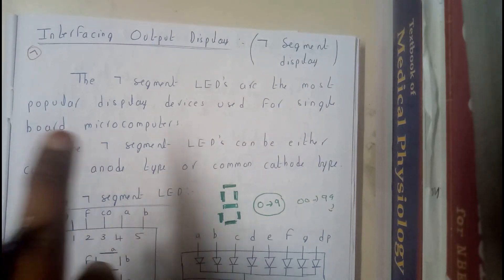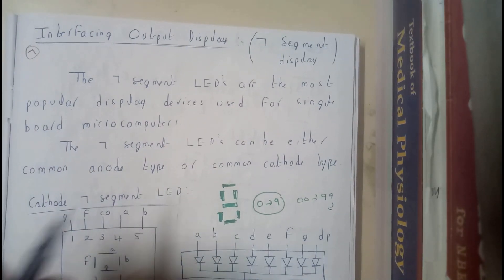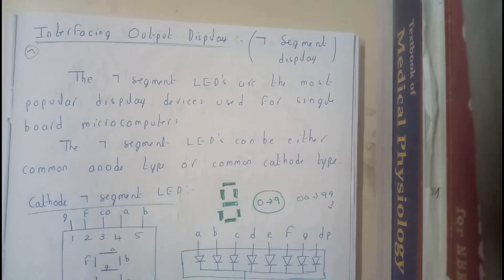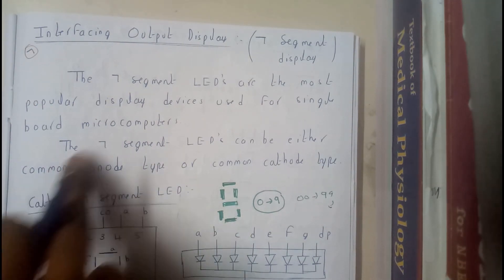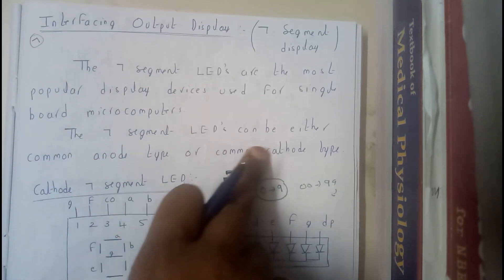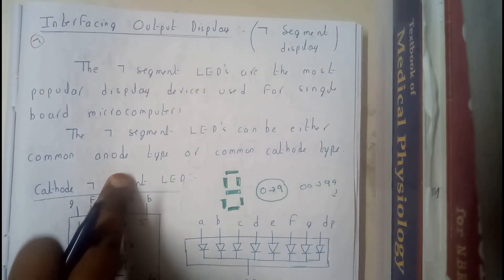So the seven segment LEDs are most popular display devices used for single board microcomputers. Even for microprocessor on 8085 kit we will be having this way of representation of address, which I think every one of you know that.